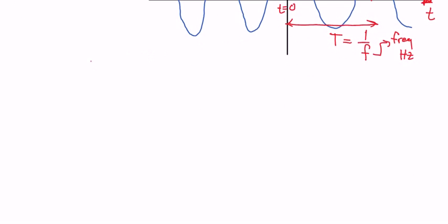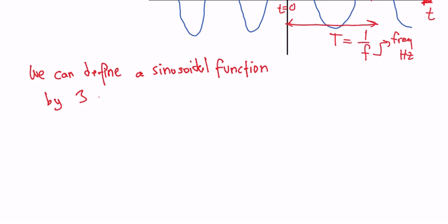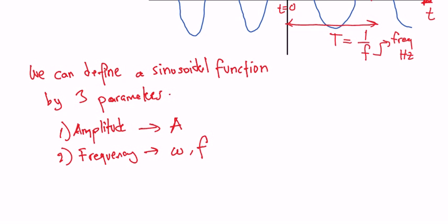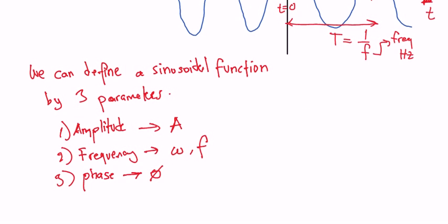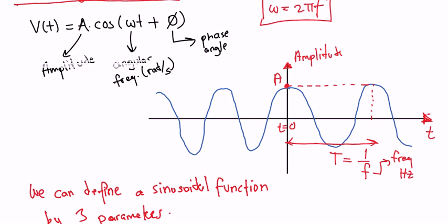So as you can see, we can define a sinusoidal function by three parameters. So what are they? The first one is the amplitude which in this case is A, the second one is the frequency which is omega or F in the above example and the third and last one is the phase which is denoted as phi according to this formula given above.